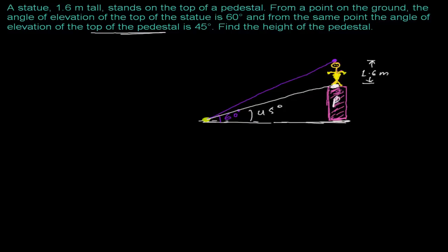Now we have to find out what is the height of this pedestal. Let me suppose this height is x meters. It is better to give some name to the points in this kind of problem. So this is A, B, C, and D. Now we have picturized our whole problem. We need to find out this height, and we have two right angle triangles: triangle BCD and triangle ACD. Using the trig ratios in these two triangles, we have to find out the height of the pedestal.